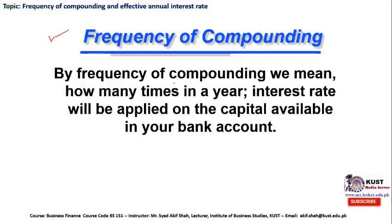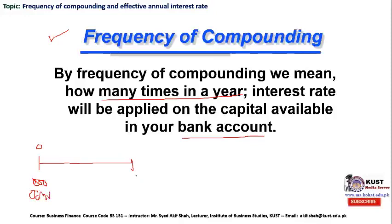By frequency of compounding we mean how many times in a year an interest rate will be applied on the capital available in your bank account. To illustrate, let's draw a timeline. Suppose a bank offers you to put $1,000 in your bank account at the start of the year, which is January 1st, and this is the completion of the first year, which is December 31st. At this point the bank is going to apply the compound annual interest rate on your initially deposited amount, and you will receive a certain number of dollars as interest earned over the period of time.